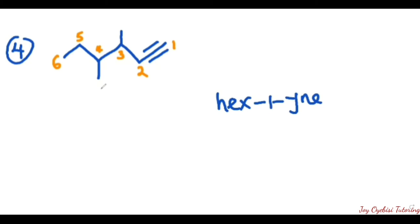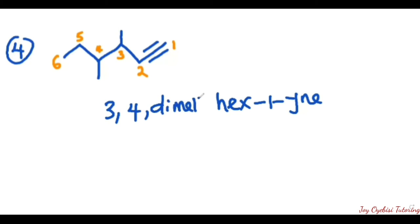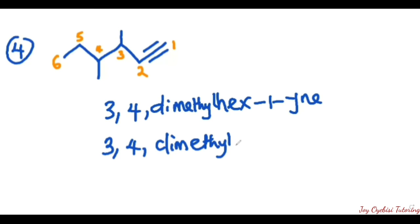We then look at the branches and at what carbon they are. On carbon three, we have one methyl group, and on carbon four, we have another methyl group — so we have two methyl groups. When you have the same alkyl group more than once, you use 'di' for two and 'tri' for three. So the name is 3,4-dimethylhex-1-yne. This is the name for this compound.